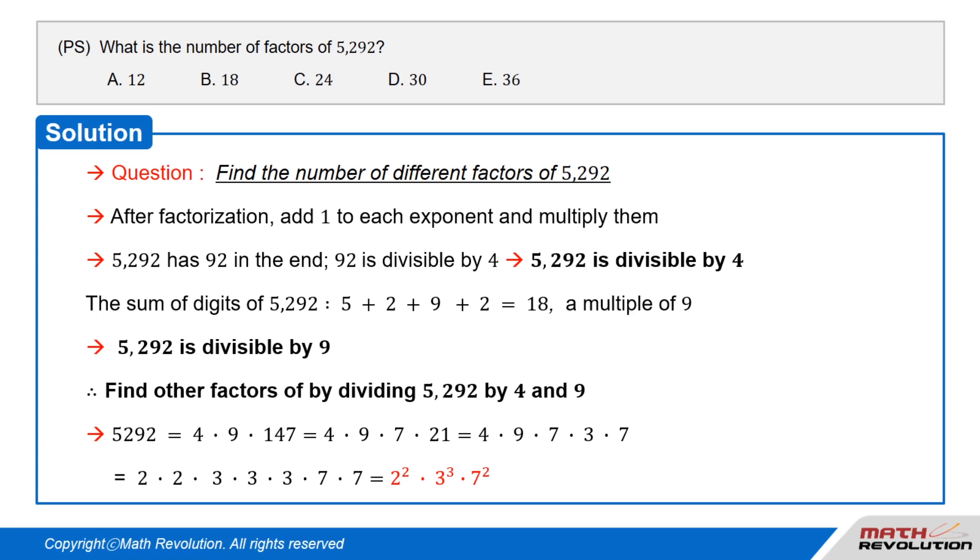This equals 2 times 2 times 3 times 3 times 3 times 7 times 7 equals 2 to the power of 2 times 3 to the power of 3 times 7 to the power of 2.